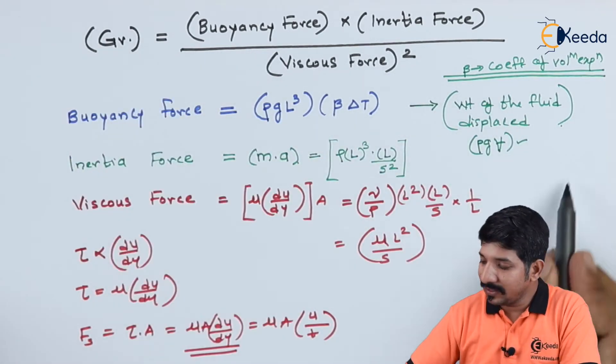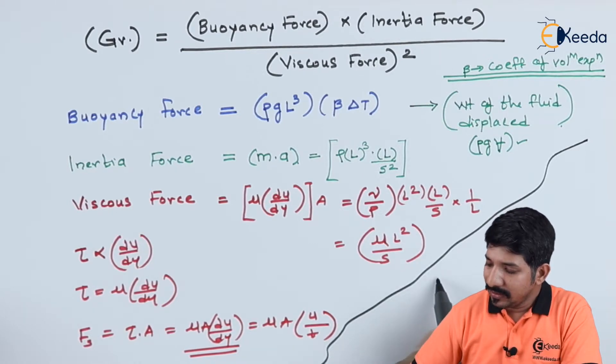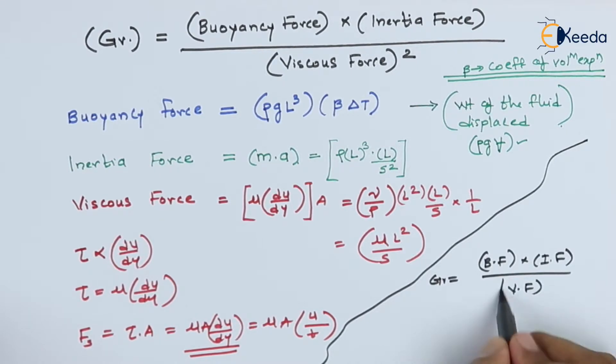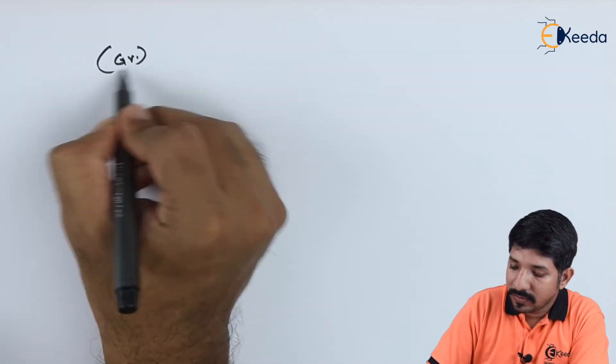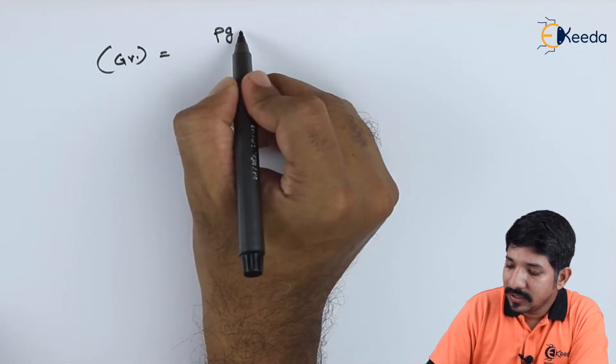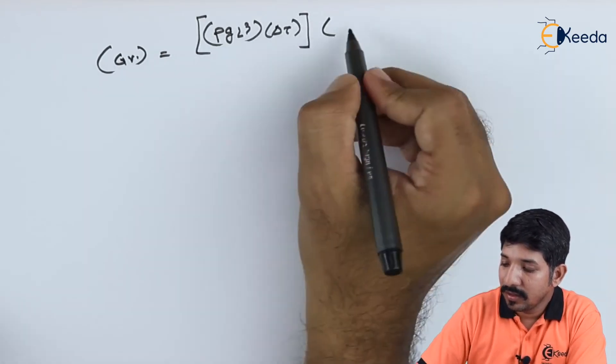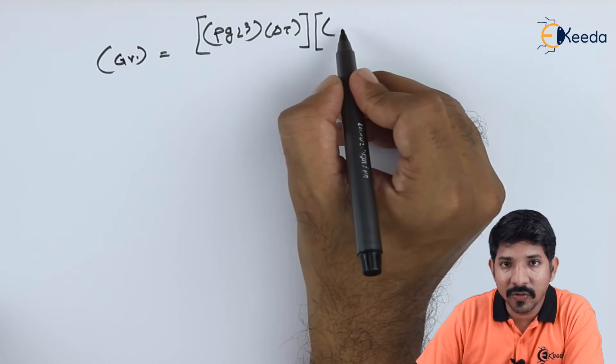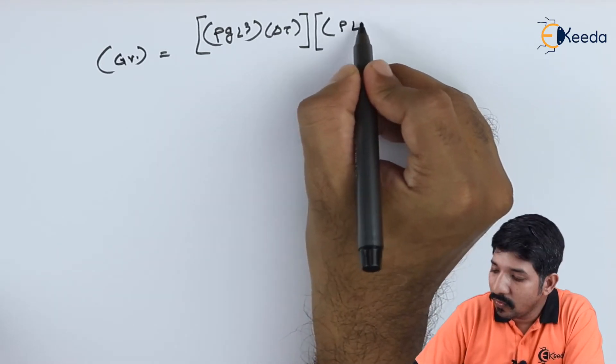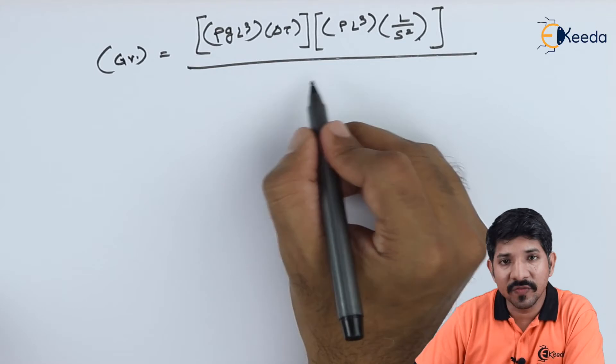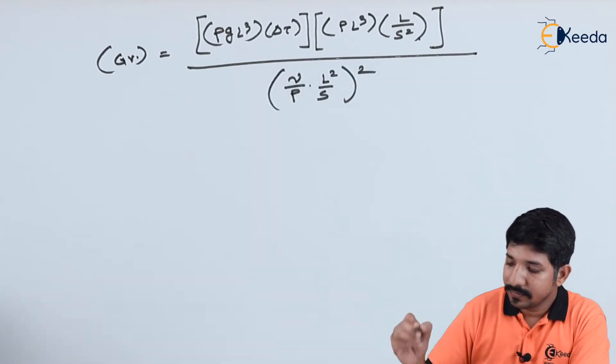Now, let us put everything in the same expression and see what we are getting. So, here the Gr number is written as, again let me write buoyant force into inertial force into the viscous force of whole square. Now, let us write down these mathematical expressions. The buoyant force is density G into L cube beta into delta t. So, this was my buoyant force. Then, let me write the inertial force. The inertial force was rho L cube L upon S square divided by the square of viscous force.